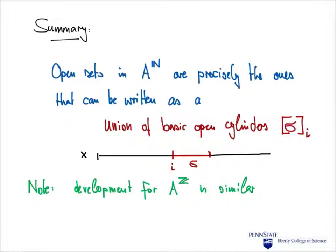The development for bi-infinite sequences is very similar. We also talk about basic open cylinders for A to the Z, and they are defined in exactly the same way as for A to the N.